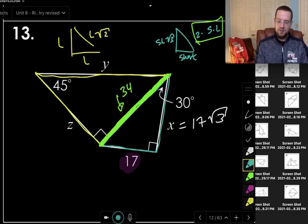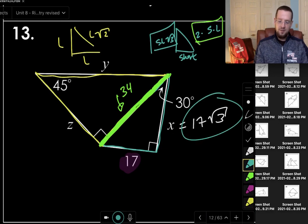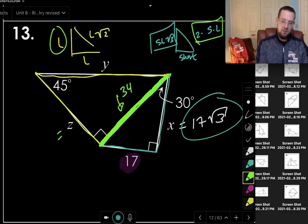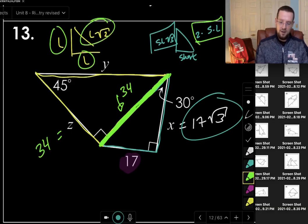So remember, long leg was short leg square root three. Short leg was 17, so this is 17 square root three. Hypotenuse is two times the short leg, so just 34. So we know that Z, we have one leg and we know that both these legs have to be the same. So this is going to be 34. And then finally, we know that the hypotenuse Y is going to be 34 with just a root two on it.